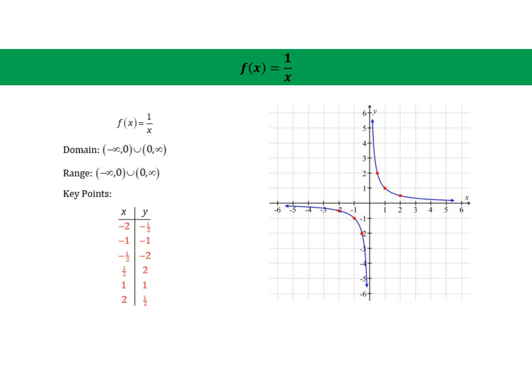And so the domain will consist of anything that's not allowing the denominator to be zero, so x can't be zero. Then you'll also see from the graph that y can't be zero, so we'll see the x-axis is excluded for that reason in the graph.